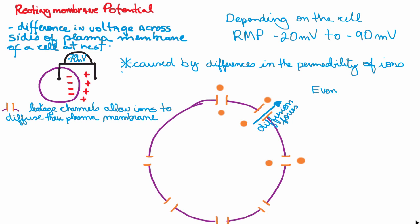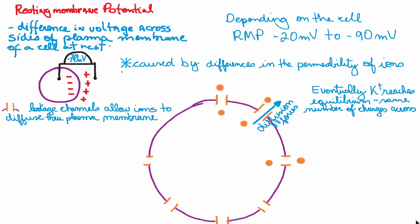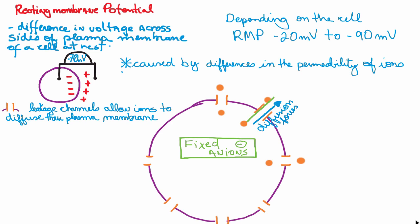Through diffusion forces only, they start to move one by one outside the cell. Because it's diffusion, you would expect that over time these potassium ions reach an equilibrium, and then the cell will end up with the same number of charges inside and outside the cell. But my cell here also has fixed-in ions.